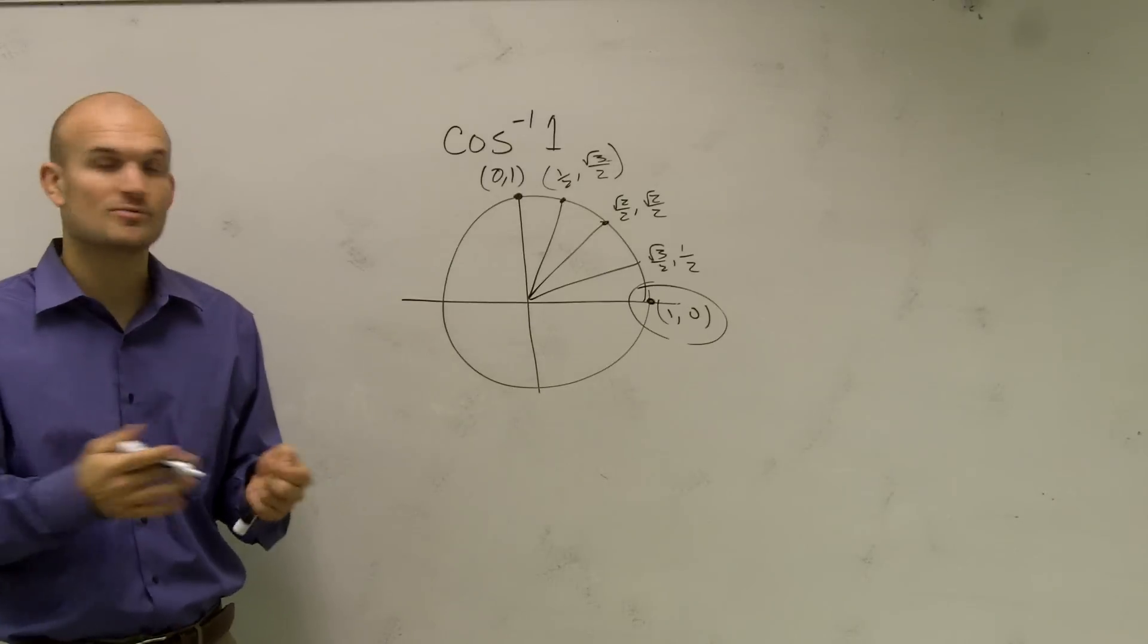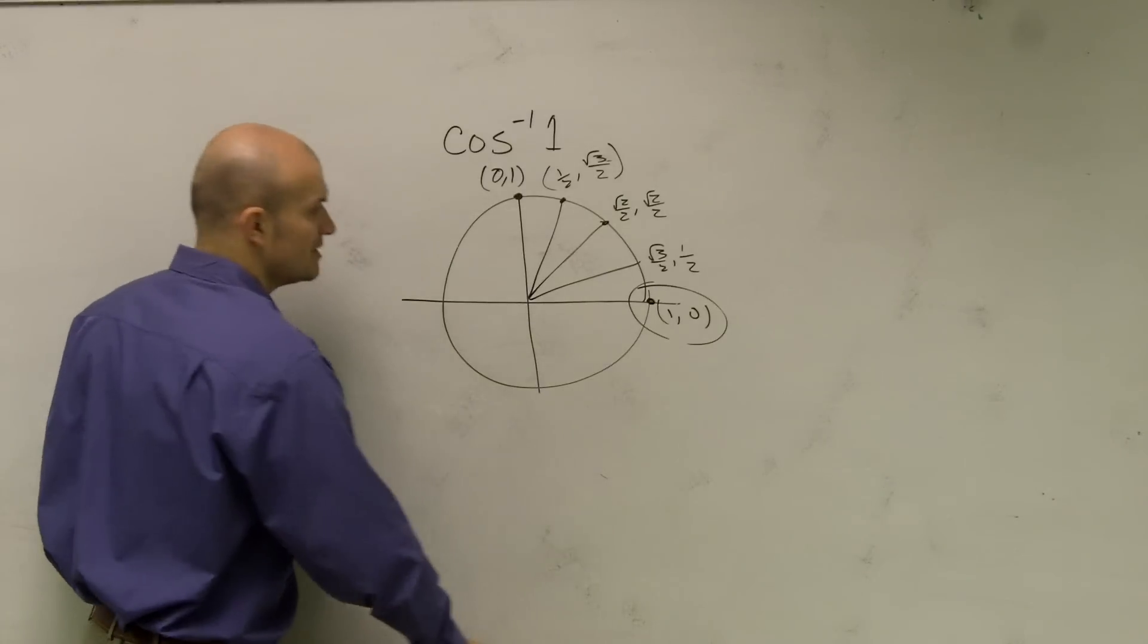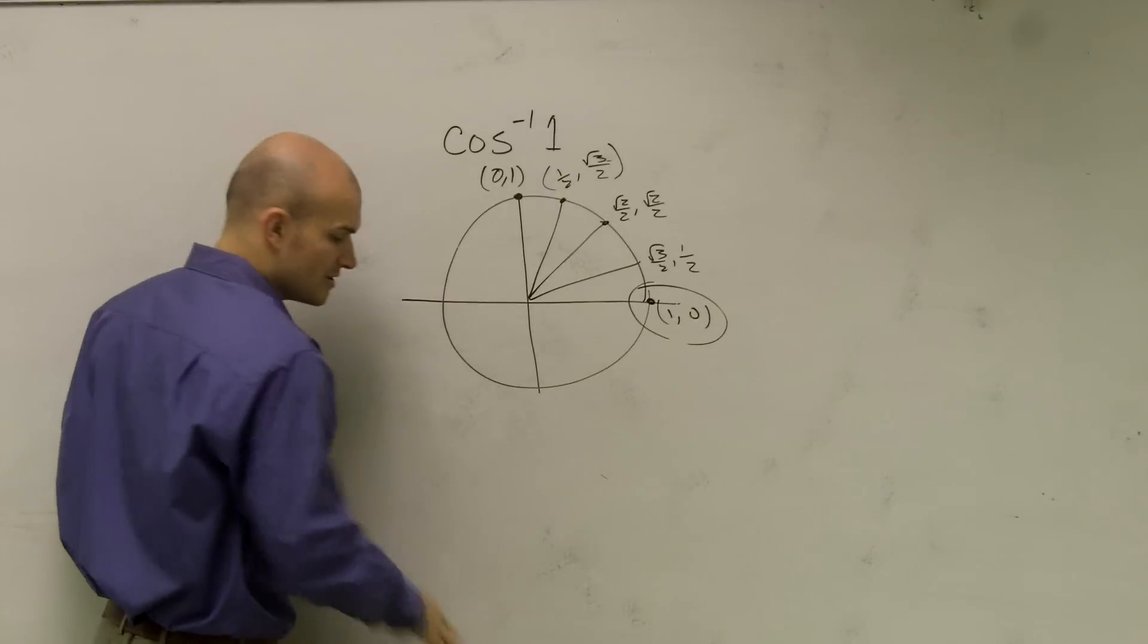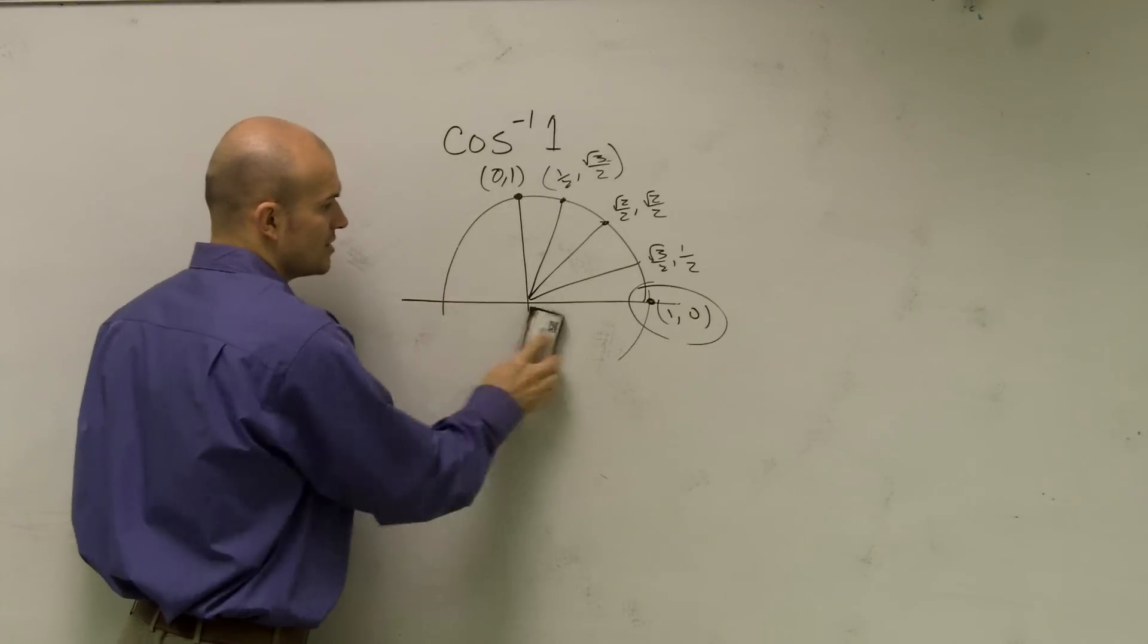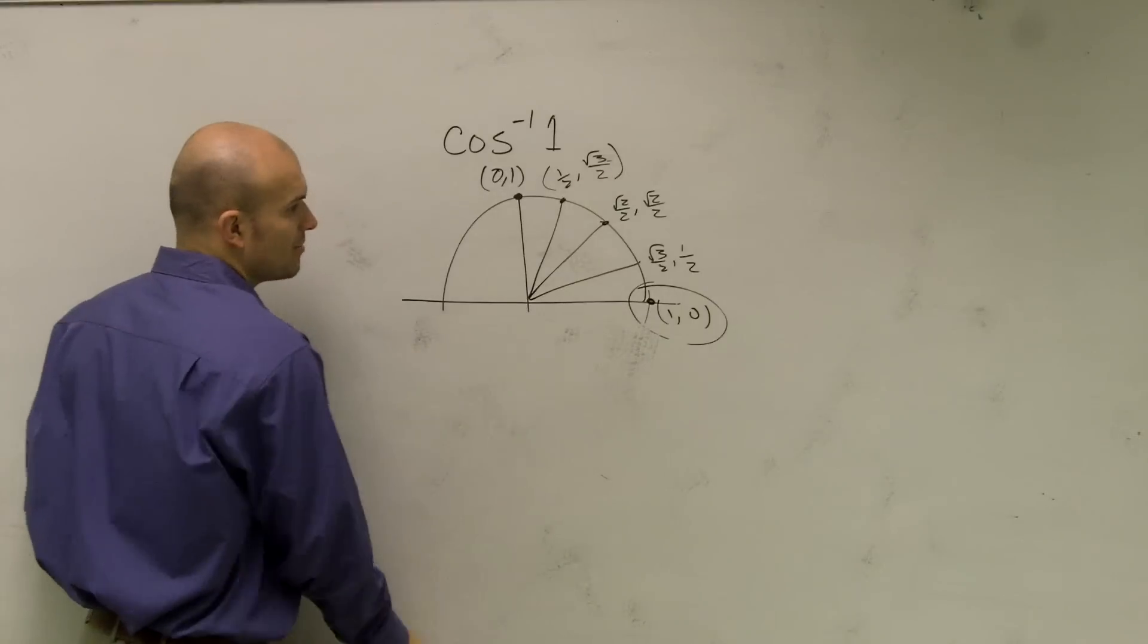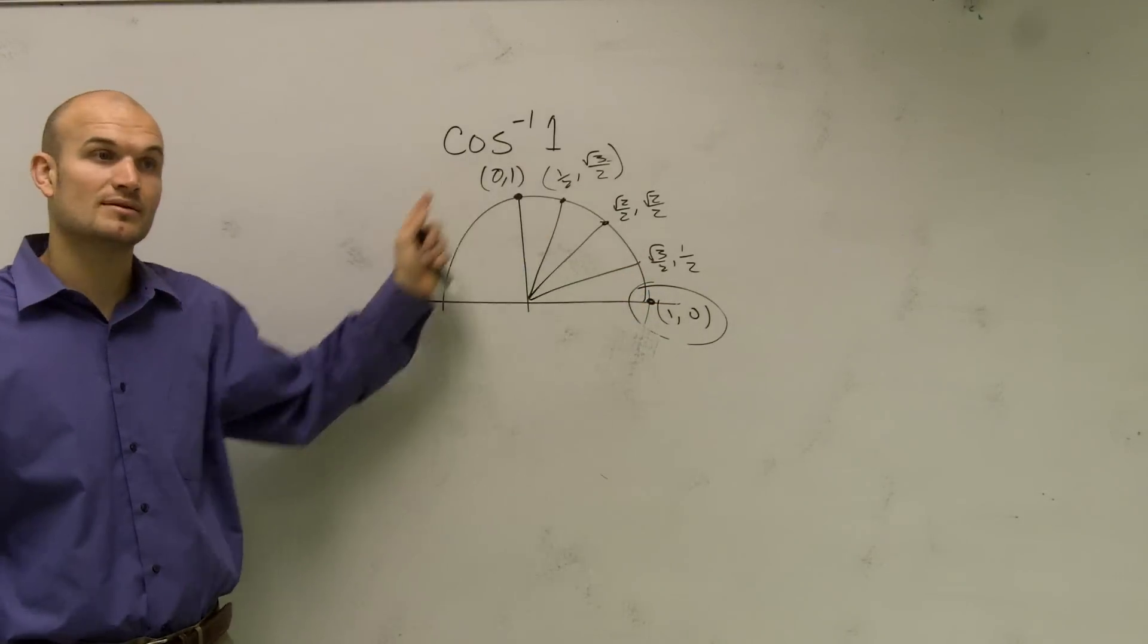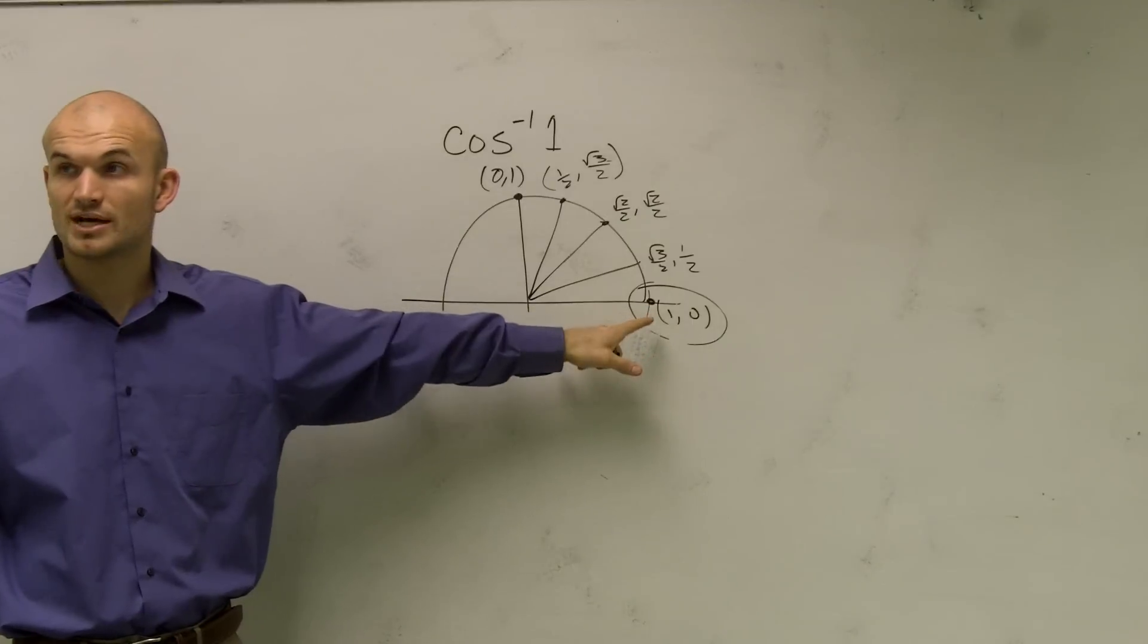And we need to make sure that it falls within our domain. Remember the domain of cosine is between 0 and pi. That was your, I'm sorry, not your domain, but your range of cosine was between 0 and pi. So therefore, I have to make sure that my point lies within the restriction, which it does.